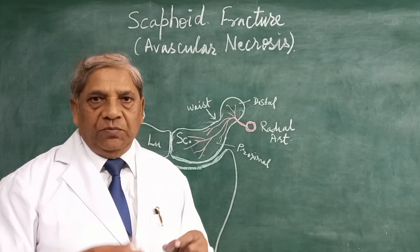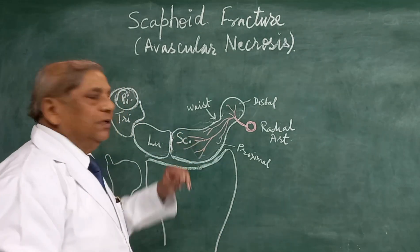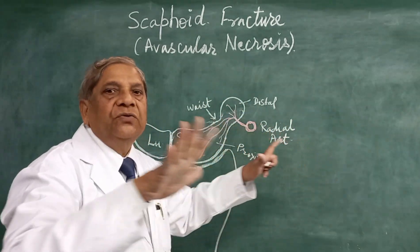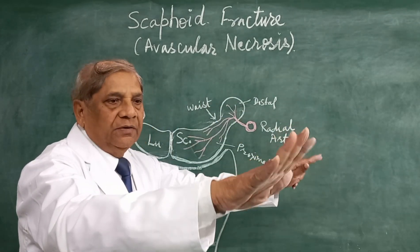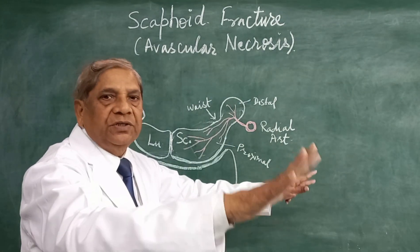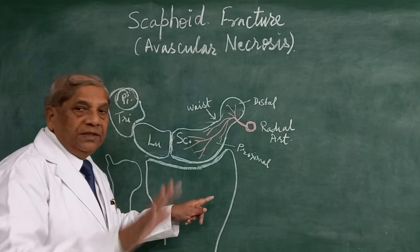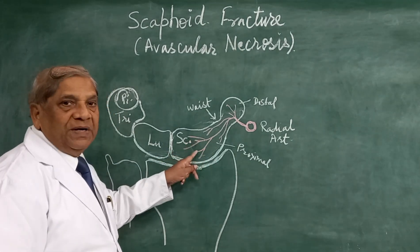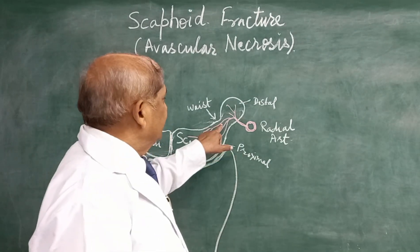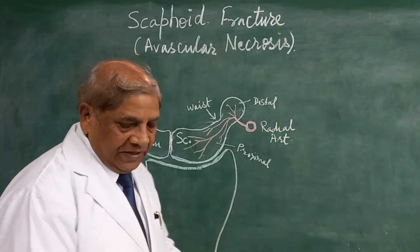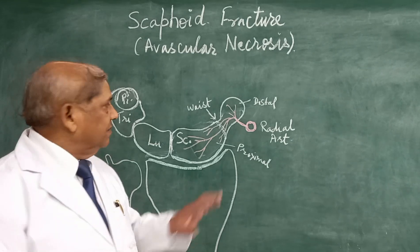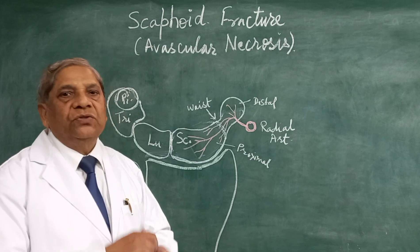The scaphoid bone is the most commonly fractured carpal bone and is fractured due to a fall — mostly a fall on the outstretched hand. When you are running and suddenly fall, you try to protect yourself by spreading your arms with fingers outstretched, and this touches the ground first. Since the radius articulates with the large part of the scaphoid, the impact forces travel from the scaphoid to the radius. And since the waist is the narrowest part of the scaphoid, the fracture takes place mostly at the waist of this bone.